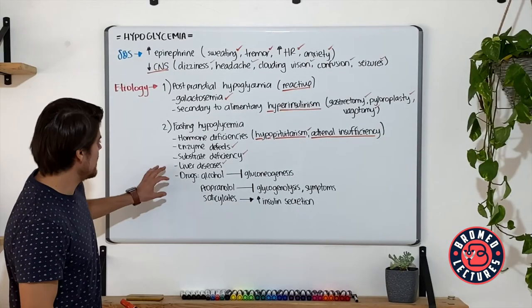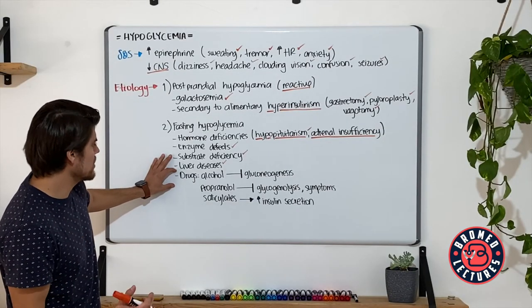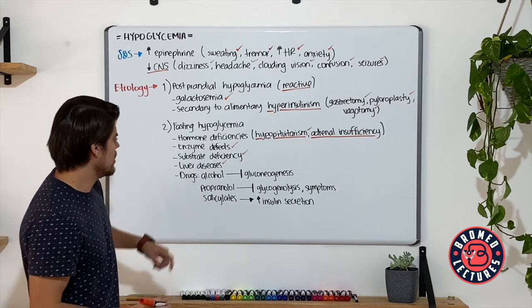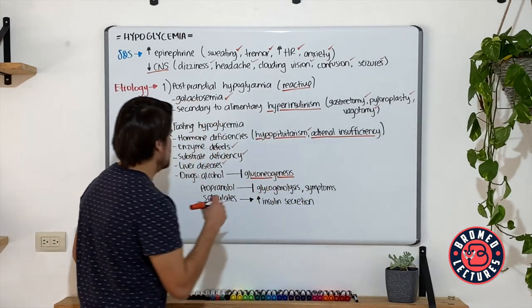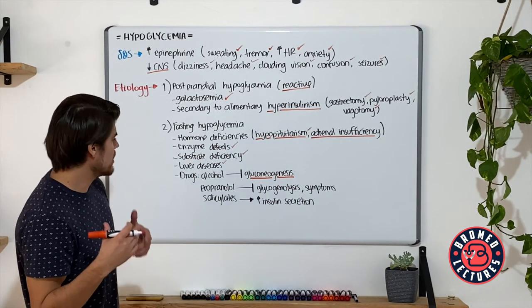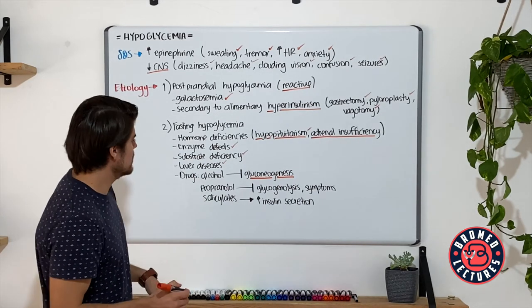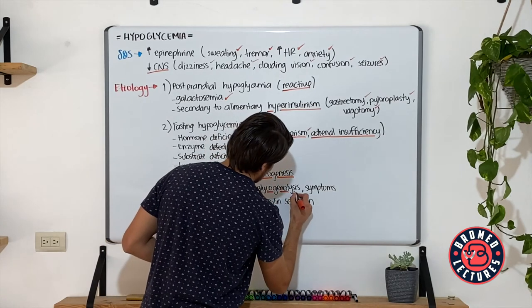We have drugs with the potential to develop hypoglycemic episodes such as alcohol. Remember that this one blocks the gluconeogenesis. Propranolol and other non-cardioselective beta blockers develop a blockade of the glycogenolysis in the liver.